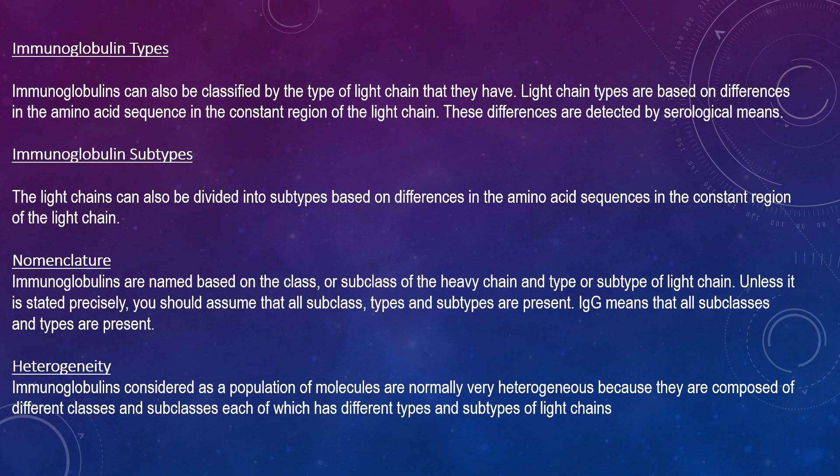Immunoglobulins can also be classified by the type of light chain they have. Light chain types are based on differences in amino acid sequences in the constant region of the light chain. These differences are detected by serological means. There are kappa light chains and lambda light chains. Looking at immunoglobulin subtypes, you get subtypes such as lambda 1, 2, 3, and 4.